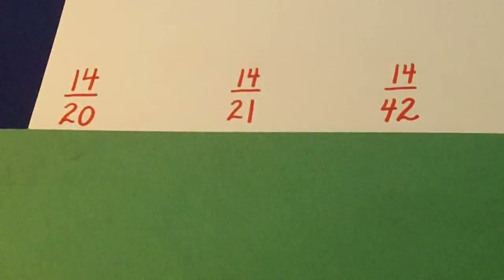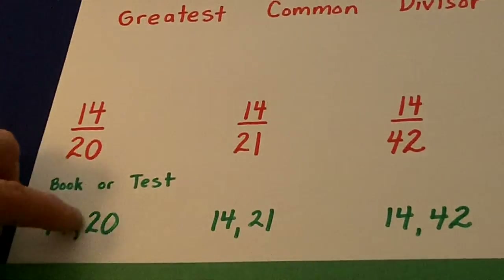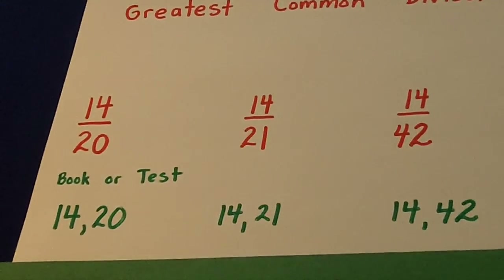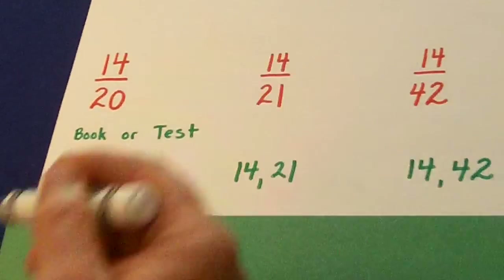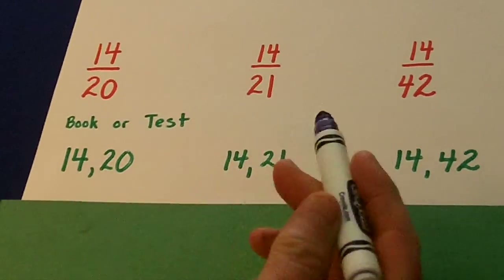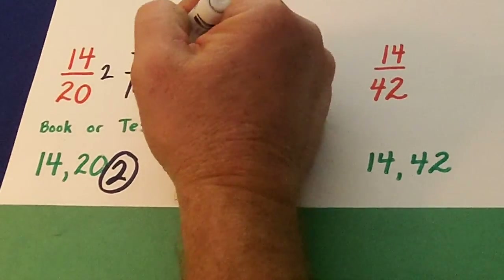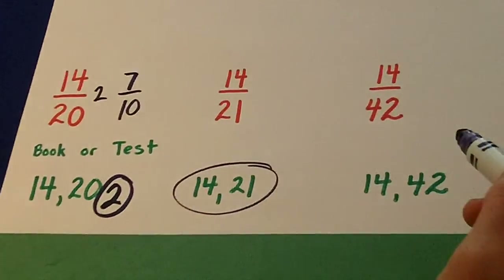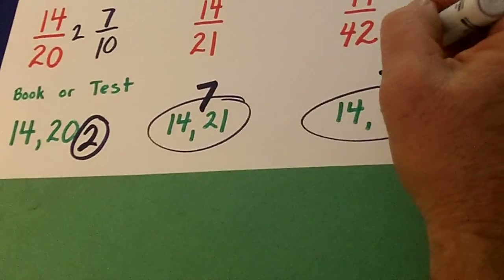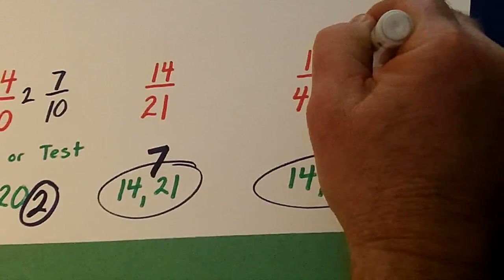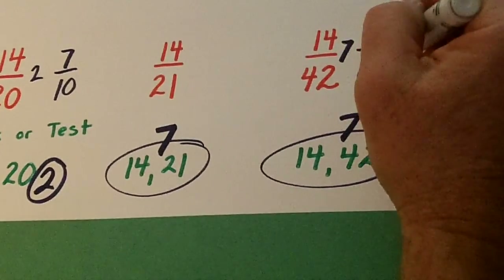Greatest common divisor — the book sometimes presents two numbers horizontally rather than as a fraction, but it's basically the same thing. How would you reduce 14 and 20? What's the biggest number that would go into them? Two — just like if we reduce 14 over 20, we'd get 7 over 10. What's the biggest number that goes into both 14 and 42? 7 goes into 14 giving 2, and 7 goes into 42 giving 6. We can reduce that by a further 2 each and get 1 third, so the greatest common divisor is 14.